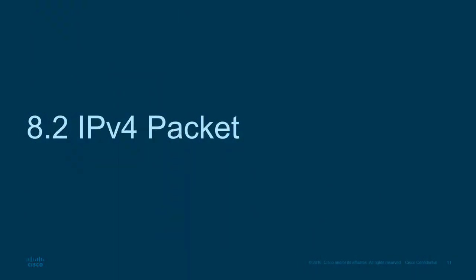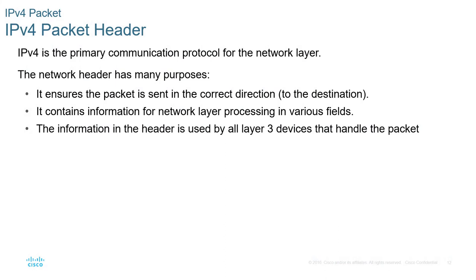Let's talk about the individual IPv4 packets. IPv4 is the primary communication standard still used in the U.S. It provides the header structure of how an IPv4 packet will be sent and organized. This allows for standard communication — ensuring it's going to the correct destination, processed correctly, and sent with the right priority. All of this is stored in that layer 3 header before it gets packaged into a data frame.